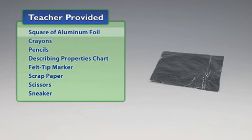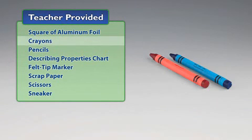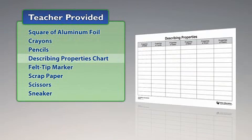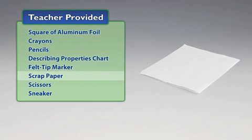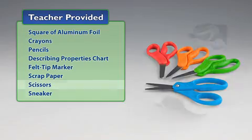You will also need to provide a square of aluminum foil from Activity 11, crayons, pencils, describing properties chart from Activity 9, felt tip marker, scrap paper, scissors, and a sneaker.